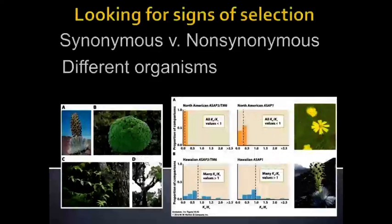Our last discussion for unit 3.2 is going to be building on what we talked about last time with neutral evolution. If we can assume that most evolution is neutral, then we can look for those examples where we have parts of the genome — maybe genes or parts of a gene — that are not evolving neutrally. In a way, the neutral theory gives us a null hypothesis.